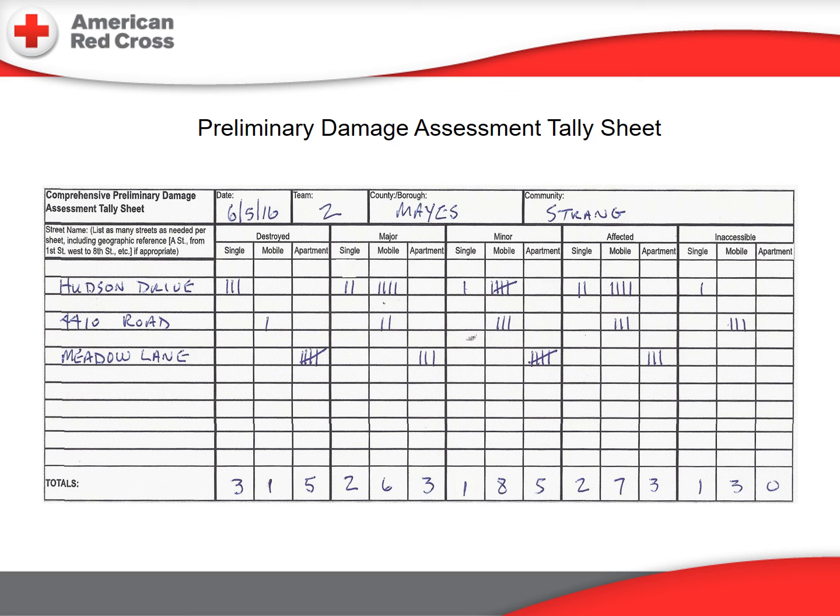The hash marks are entered in the appropriate column to indicate the dwelling type — single family, mobile, or apartment — and the damage classification: destroyed, major, minor, affected, or inaccessible. Enter the total of the hash marks in each column at the bottom of each completed page, so that management can quickly assess the magnitude of the disaster event.